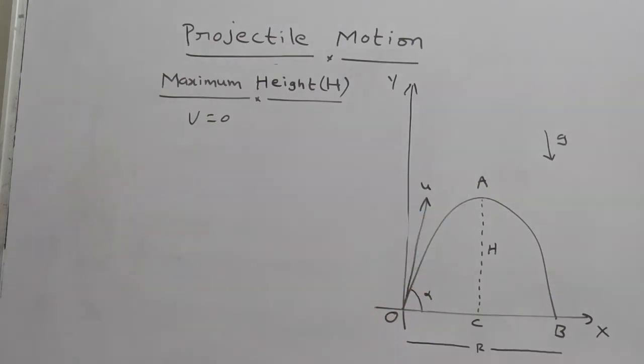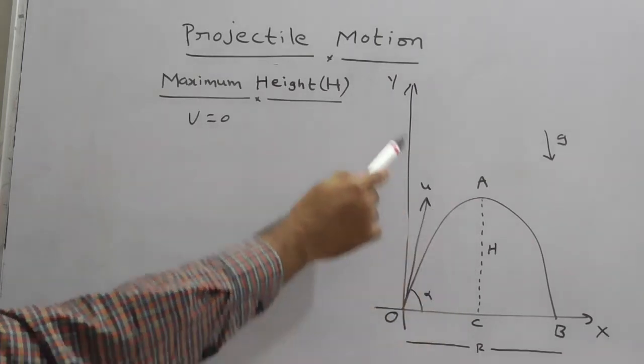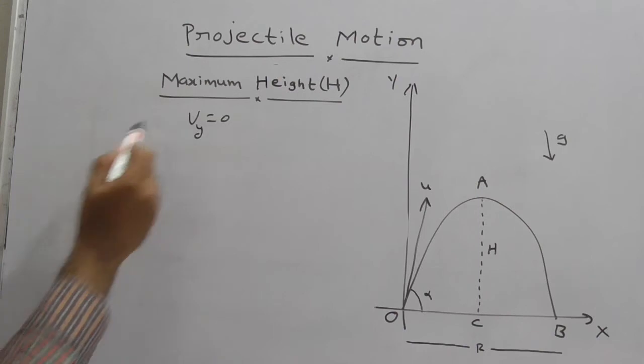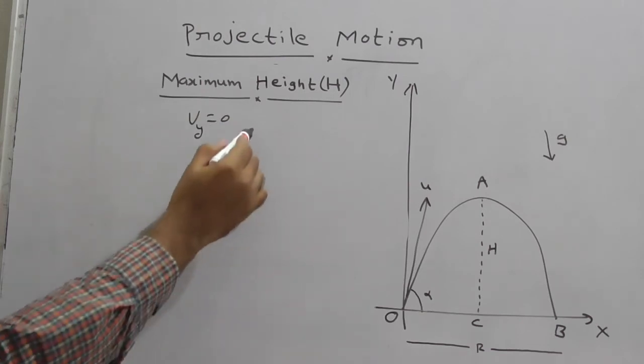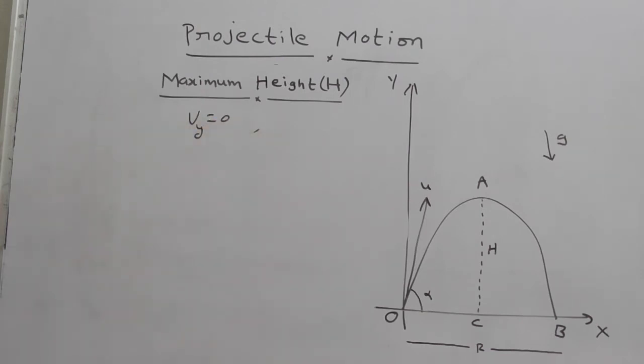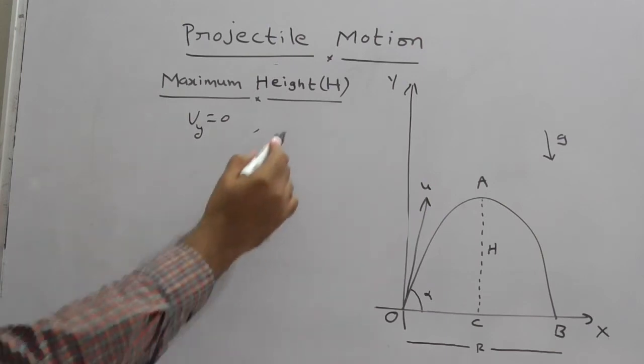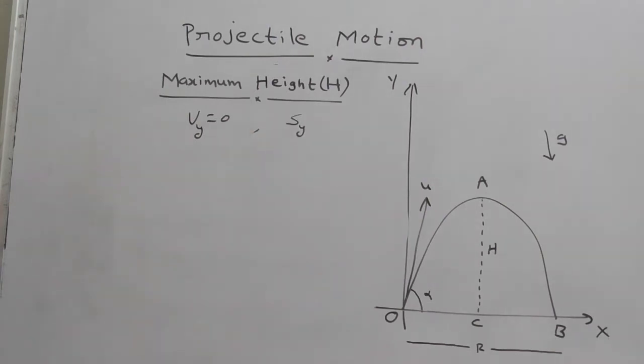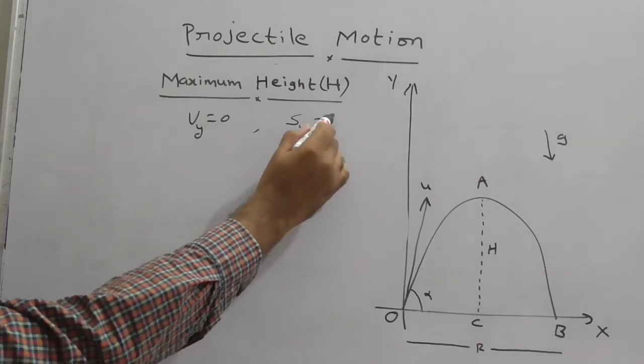Here the velocity you can take in the direction of y-axis, therefore you can write it as Vy. Now we have to calculate H. What is H? That is the distance the particle traveled along y-axis - that is displacement of the particle along y-axis, which is Sy. Sy gives H.